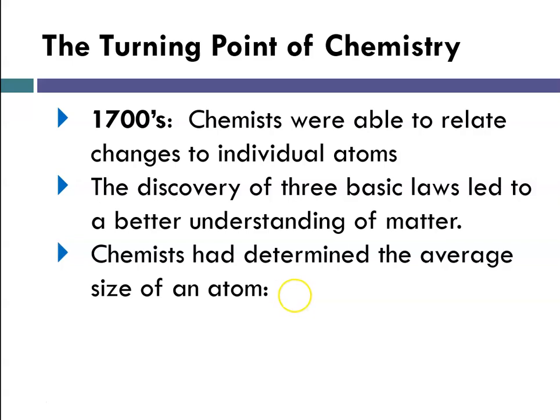At that point in time, in the late 1700s, chemists had determined what the average size of an atom was. They had determined that the mass was about 10 to the minus 23 grams and that the diameter was about 10 to the minus 8 centimeters.